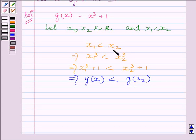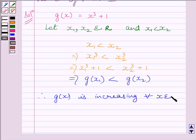Now, we can see x₂ > x₁ implies g(x₂) > g(x₁) for every x₁, x₂ belonging to real numbers. So, this implies function is increasing at every real number. So, we can write g(x) is increasing for every x belonging to real numbers.